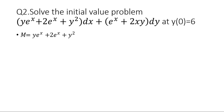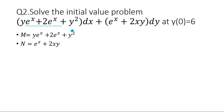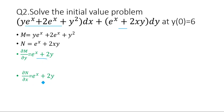The next question involves an exponential equation: (ye^x + 2e^x + y²)dx + (e^x + 2xy)dy = 0, with the initial condition y(0) = 6. We note M = ye^x + 2e^x + y² and N = e^x + 2xy. Checking exactness: ∂M/∂y = e^x + 2y and ∂N/∂x = e^x + 2y. Since both are equal, the equation is exact and we proceed with the grouping method.